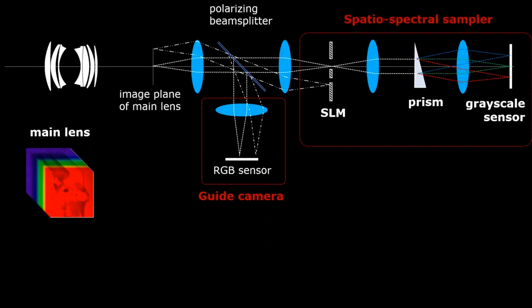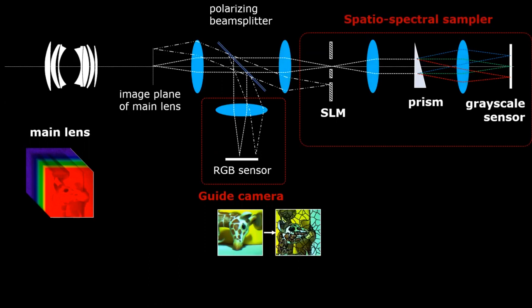The SASE pipeline proceeds as follows. First, the RGB or the guide camera captures a color image of the scene, which is then used to build superpixels. These superpixels are then utilized to generate a mask that is loaded onto the spatial modulator. This mask is created in such a way that no two spectral lines overlap.